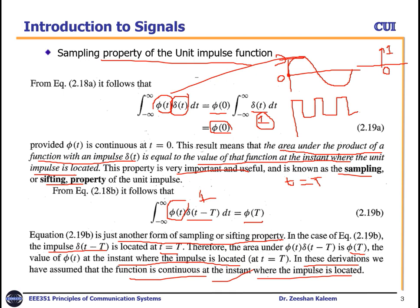So we can use the sampling property to get samples and ultimately convert an analog signal to a digital signal.